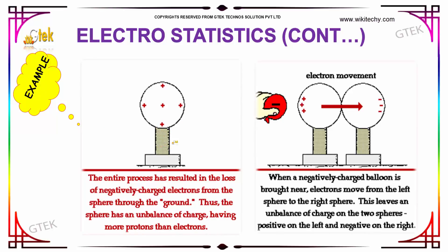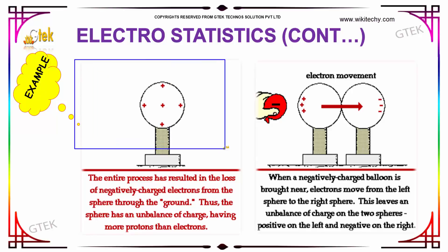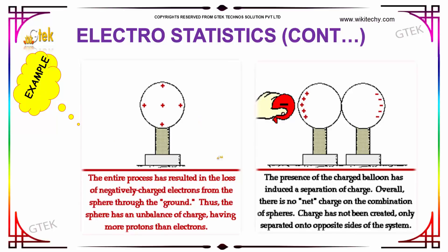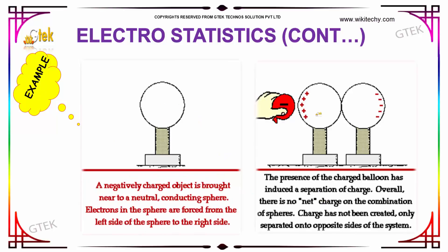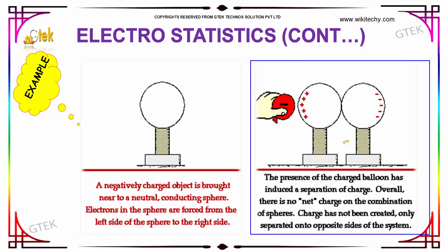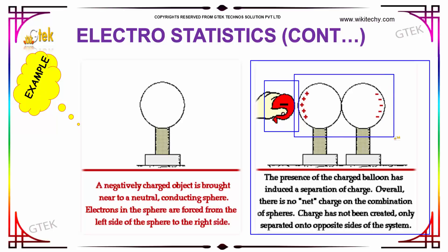As a result of this entire process, there is a loss of negatively charged electrons from the sphere through the ground. Thus the sphere has an unbalanced charge — having more protons than electrons. The presence of the charged balloon has induced a separation of charge, but there is no net charge on the combination of spheres. Therefore, the charge has not been created, only separated onto opposite sides of the sphere.